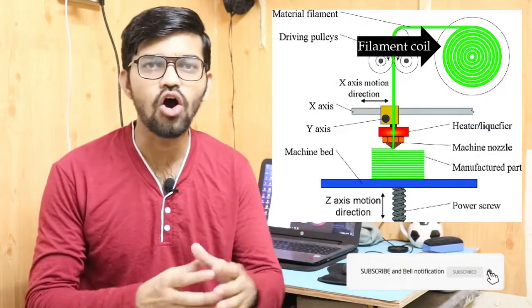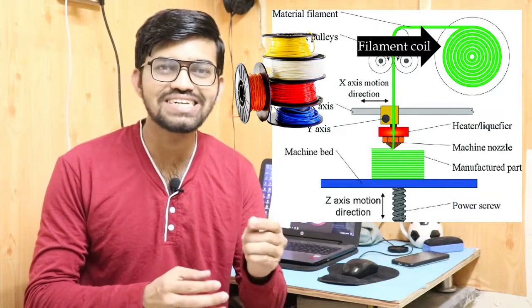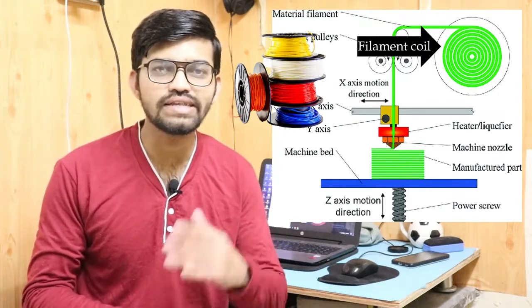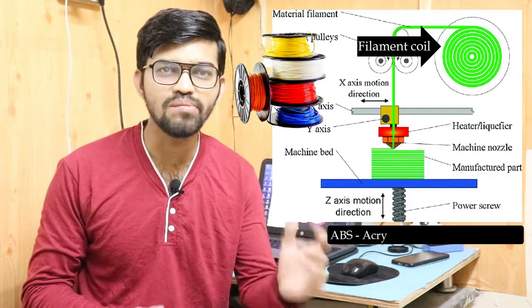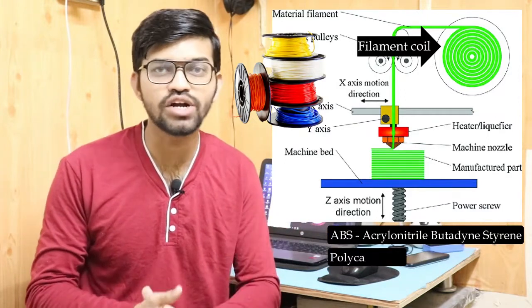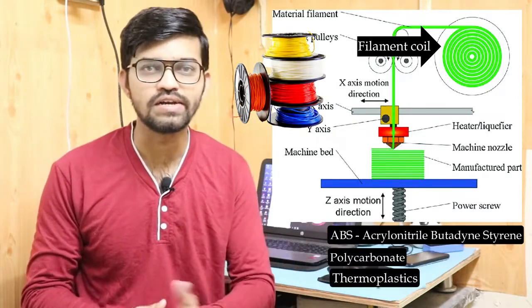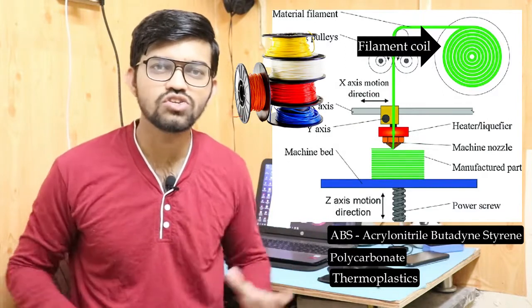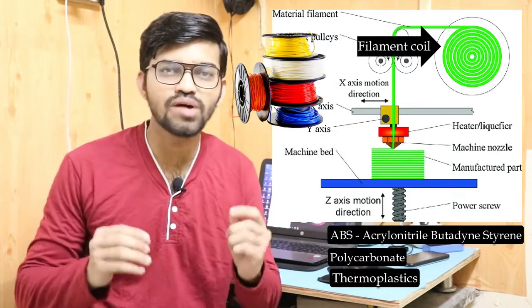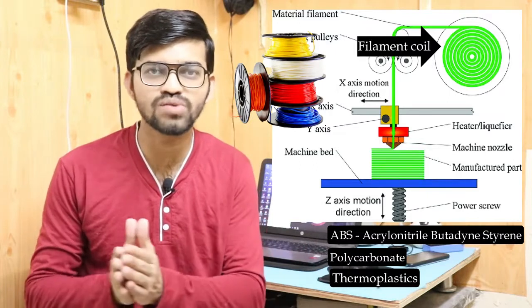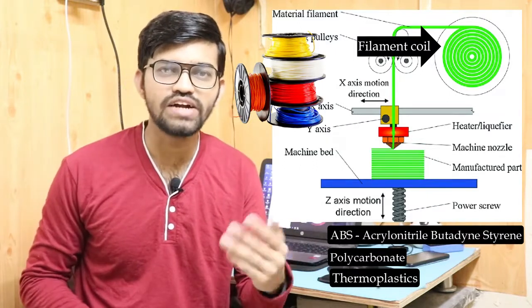The majorly used materials in FDM are ABS, polycarbonate, and other thermoplastics. In this video we are going to learn about the actual process of Fused Deposition Modeling, along with its advantages, disadvantages, and applications.